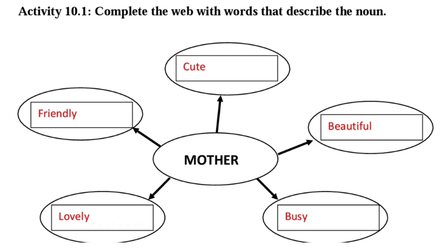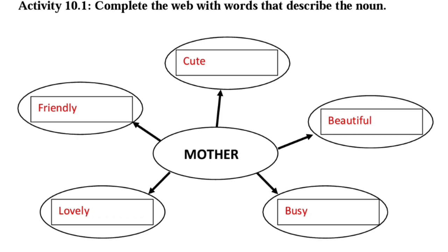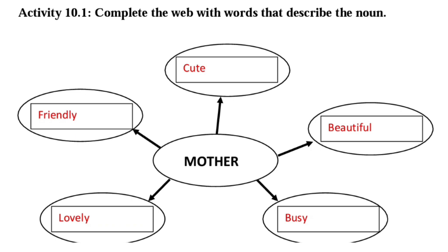Complete the web with the words that describe the noun. Here the noun is 'mother.' I have given a few adjectives for mother — you can write your own. For example: cute mother, beautiful mother, friendly mother, lovely mother, busy mother, kind mother — like this.